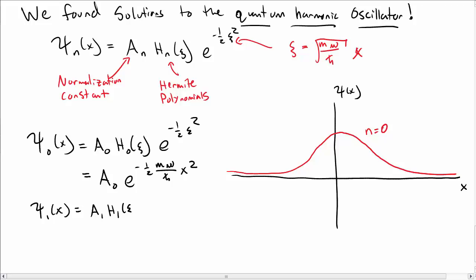ψ₁, the first excited state, looks like A₁H₁(ξ)e^(-½ξ²). Remember H₁(ξ) was 2x or 2ξ in this case. So we replace for x everywhere—we substitute in x for ξ. And so our first excited state, if you plot it, will look something like this. Again, roughly what we expected.